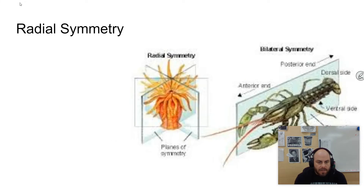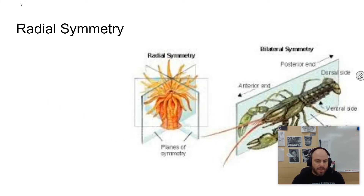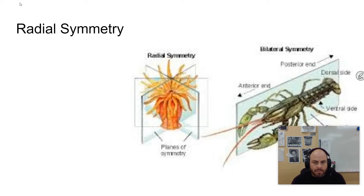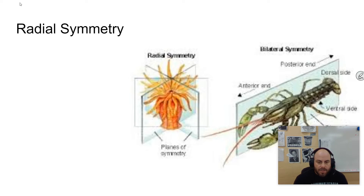Cnidarians have radial symmetry, which means that they have multiple lines of symmetry. Most cnidarians are round or circular in shape, and so they have multiple lines of symmetry like you see there.